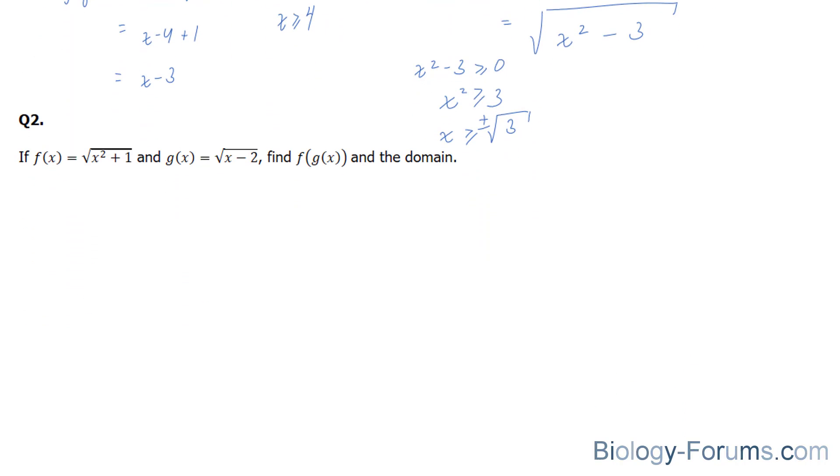In question number two, they ask, if f of x is equal to the square root of x squared plus 1 and g of x is equal to the square root of x minus 2, find f of g of x.